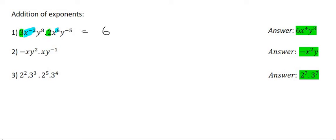Then we see x to the minus two and x to the six. Now the exponent rule says that you should add them. So you take the minus two and you add it to the six and minus two plus six is four. So we'll say x to the power of four.